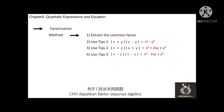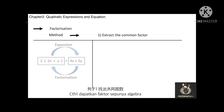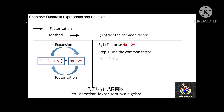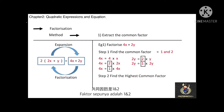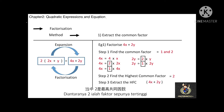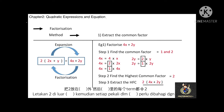Factorization example by extracting the common factor: factorize 4x plus 2y. Step 1 is to find the common factor of 4x and 2y. 4x can be 4×x, 2×2x, or 1×4x. While 2y can be 2×y or 1×2y. Among all these factors, the common factors of 4x and 2y are 1 and 2. Since 2 is the highest common factor, we extract it: the result is 2(2x plus y).